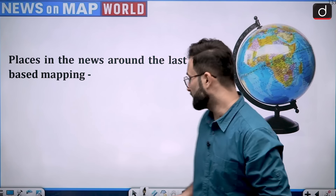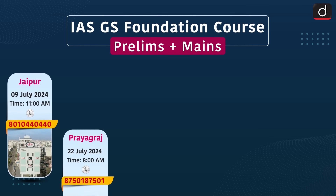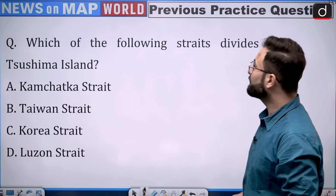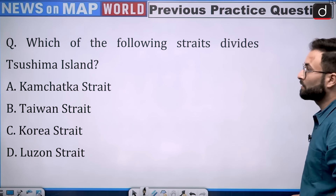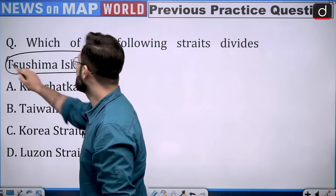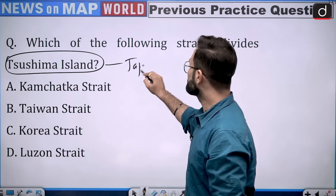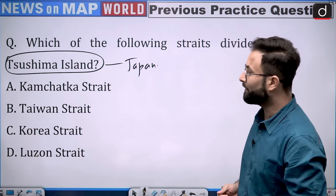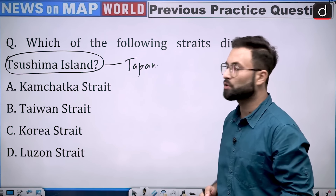Let us start with the practice question which was given in the previous lecture. The question was: which of the following straits divides Tsushima Island? This is a Japanese island belonging to Japan. Options are Kamchatka Strait, Taiwan Strait, Korea Strait, and Luzon Strait.